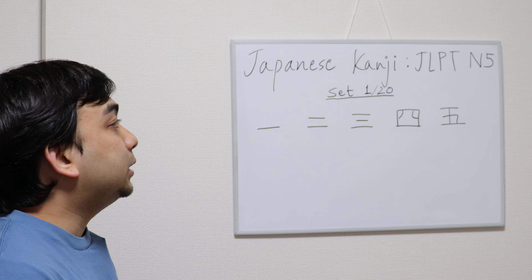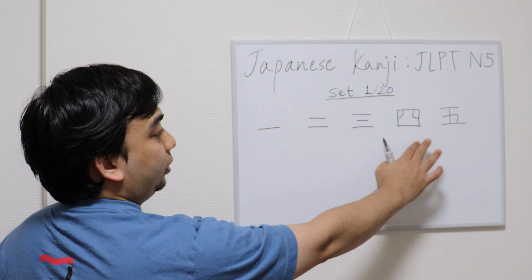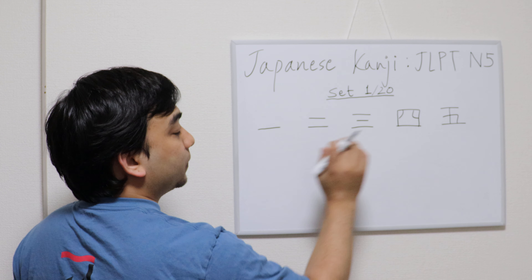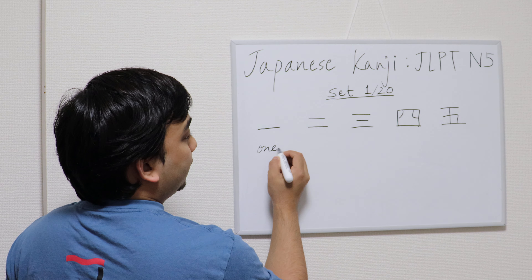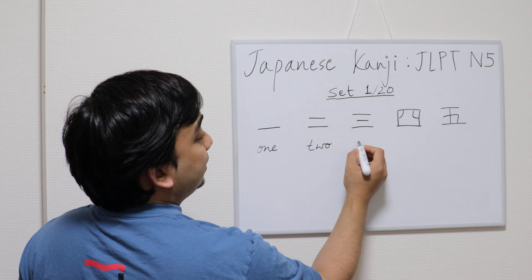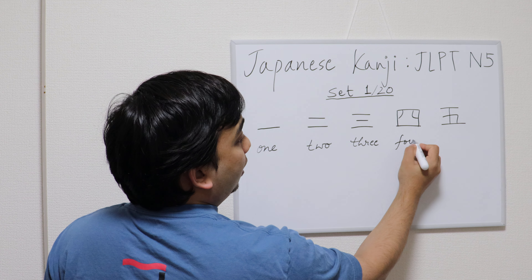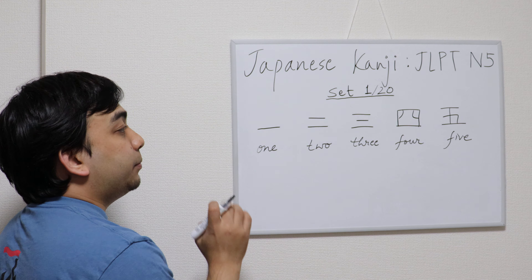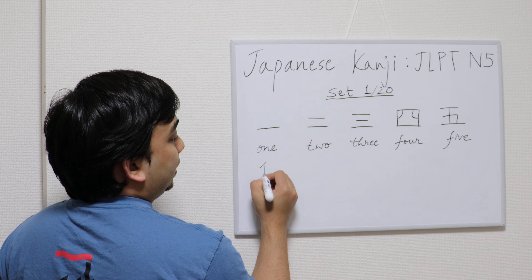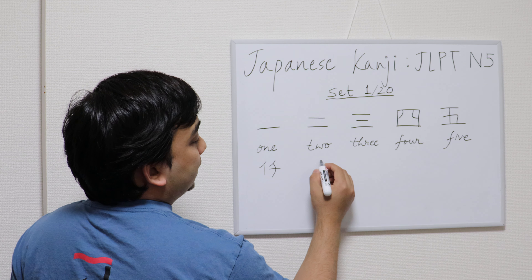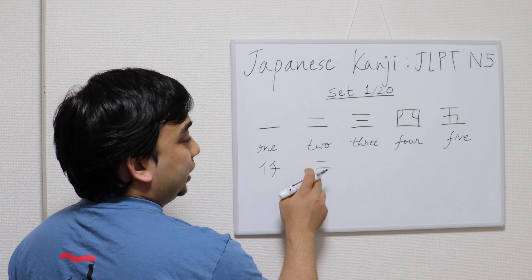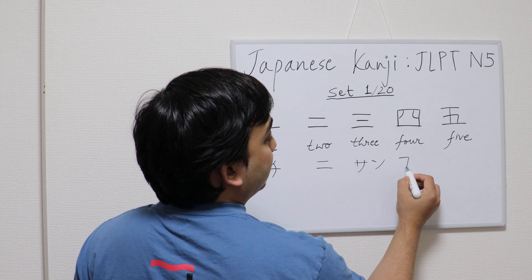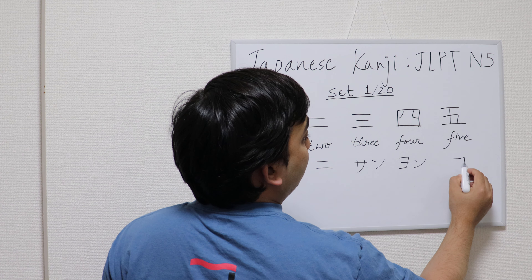This set consists of five kanjis as you can see here. These kanjis each represent numbers. This is number one, this is number two, this is three, four, and five. The meanings are as follows, and the pronunciations are: ichi, ni, san, yon, and go.